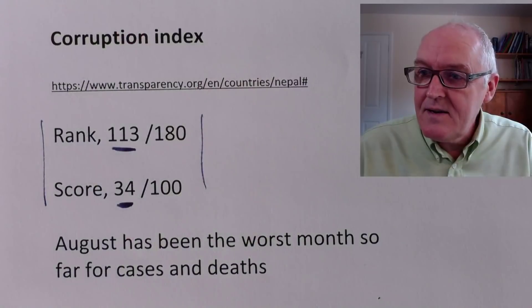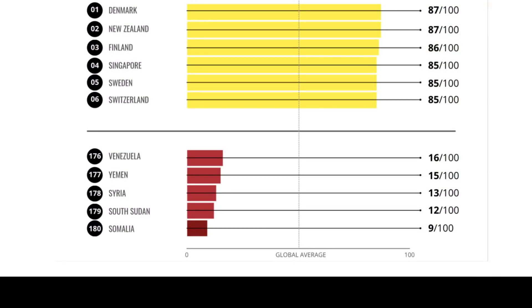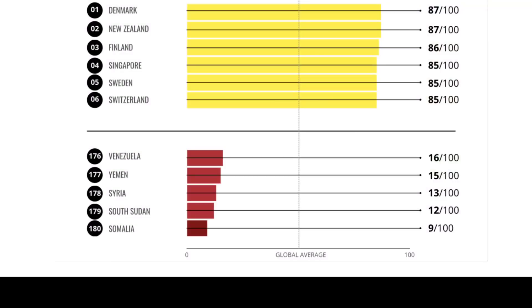So if you want to know where you stand, I've given you the link for the Transparency Organization, which does a lot of good work. The least corrupt country in the world, according to this ranking, is Denmark, who scores 87 — similar to New Zealand, then Finland, then Singapore, Sweden, Switzerland. And where's the United Kingdom? Where's the United States? Well, this data tells us not in the top six. The most corrupt are Venezuela, Yemen, Syria, South Sudan, Somalia, and of course lots of countries in between.